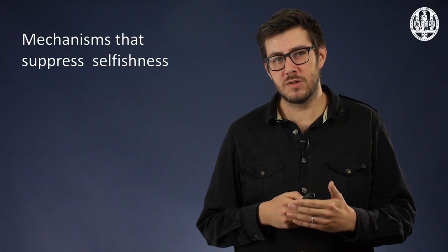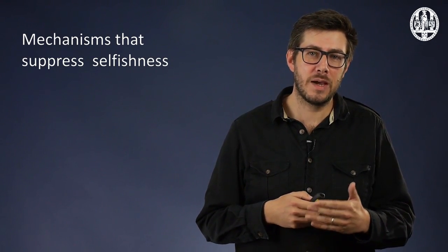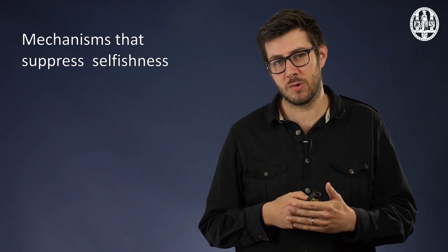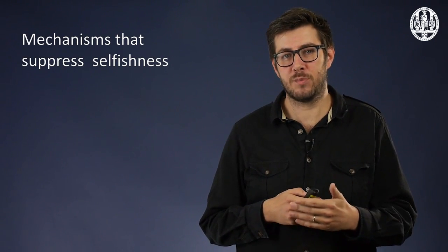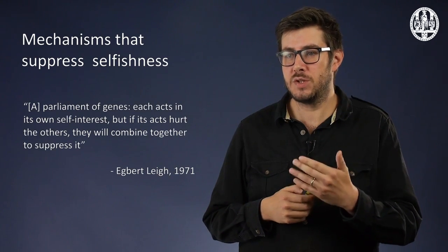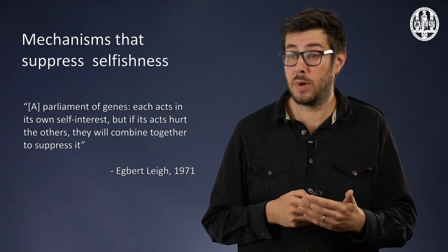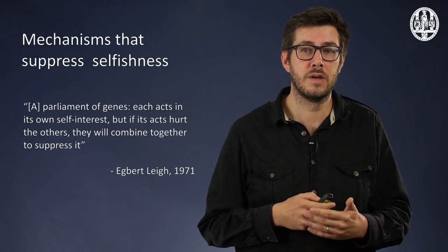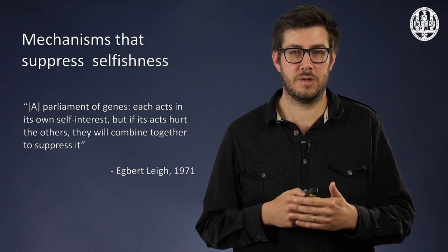We would therefore expect to see other genes evolve a response, and indeed we do see this. Mechanisms that suppress segregation-distortion have been known about since the 1950s. In the words of Egbert Lee, the genome is like a parliament of genes. Each acts in its own self-interest, but if its acts hurt the others, they will combine together to suppress it. In this video, we will explore more of these mechanisms that suppress selfishness.